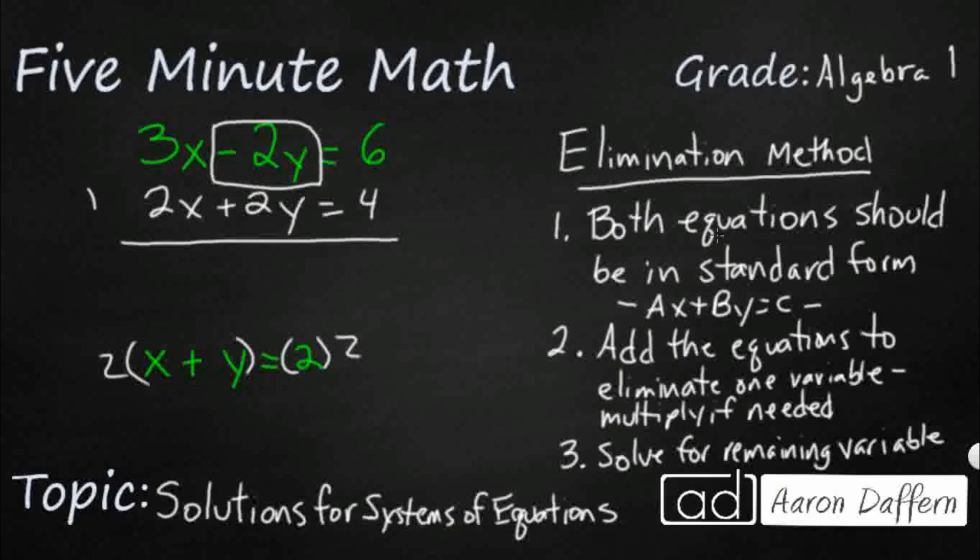But watch. If I add these two equations up, now I'm going to get 5x. But I've got a negative 2y plus positive 2y. It's going to get rid of each other. That equals 10. And now I simply solve for the remaining variable.